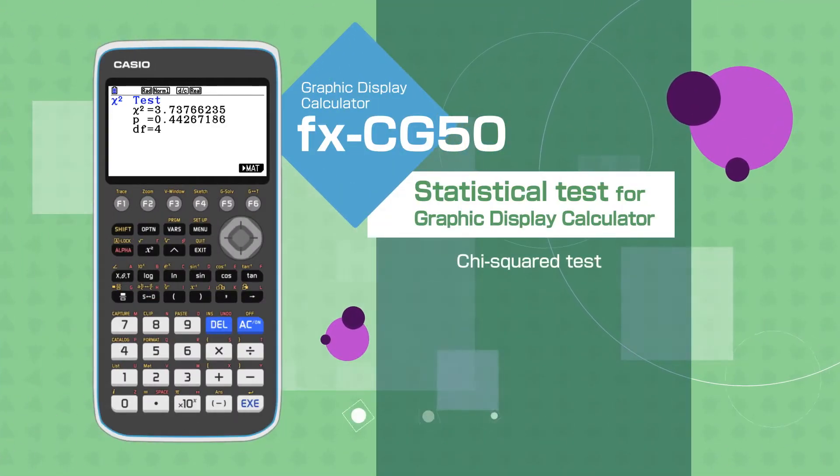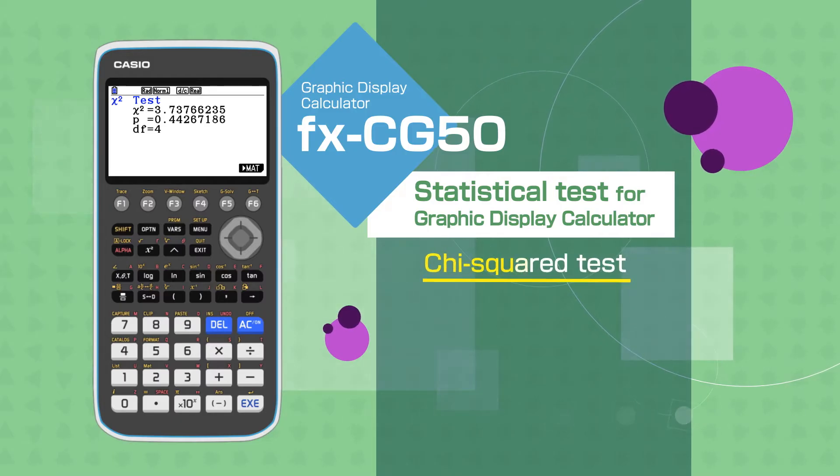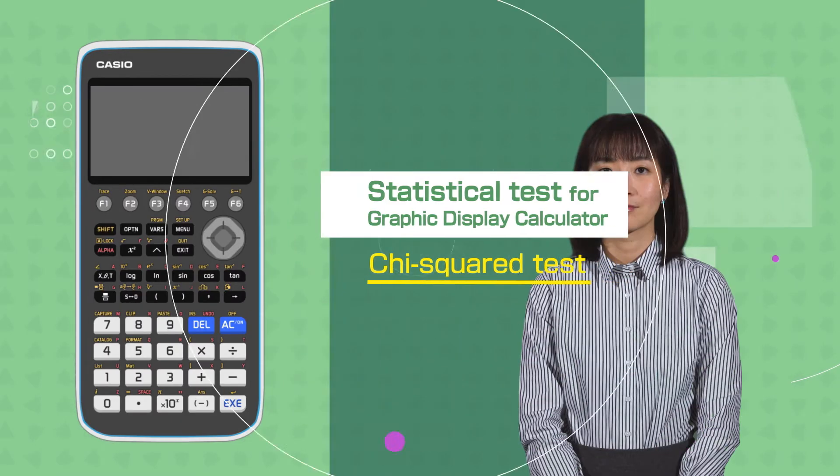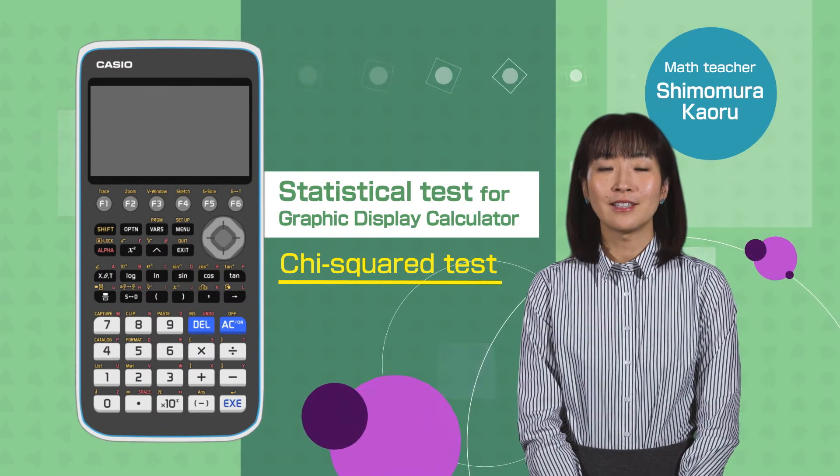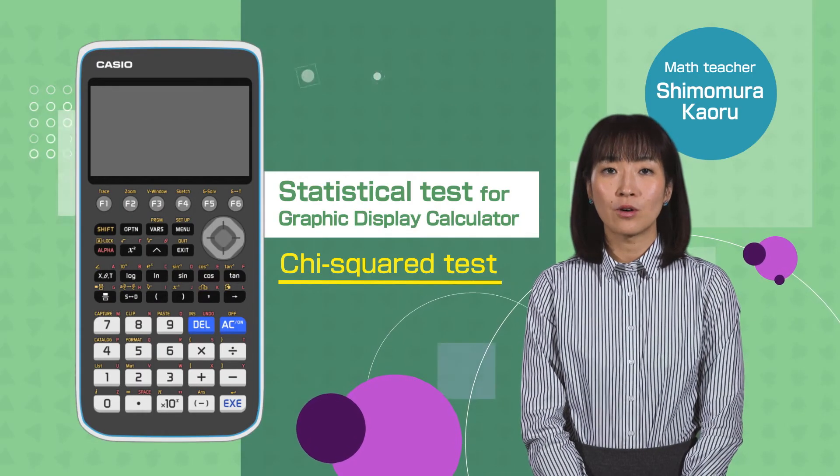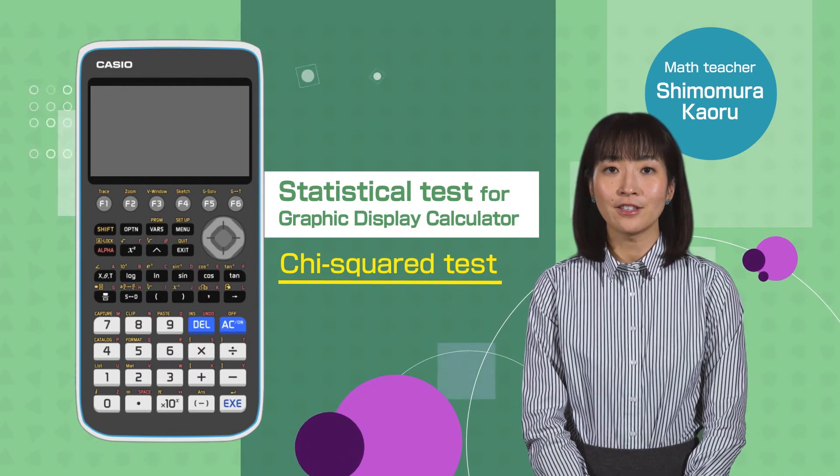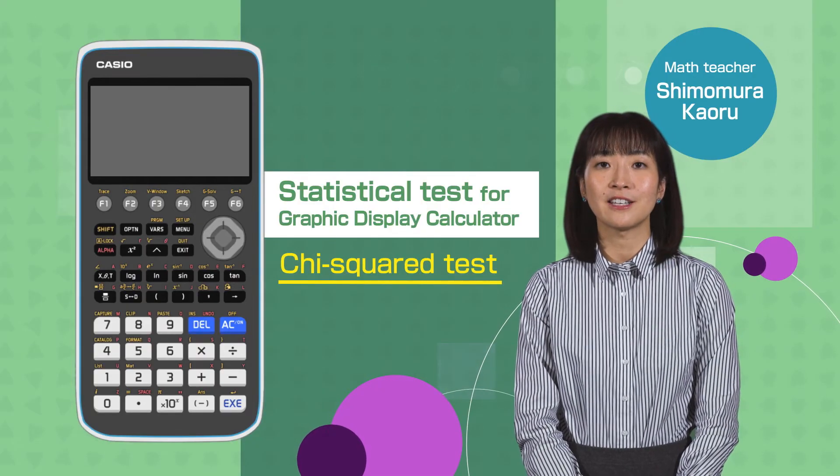Statistical Test for Graphic Display Calculator: Chi-Squared Test. Hi everyone! In this video, we are going to show how to calculate Chi-Squared values using Casio FX-CG50.